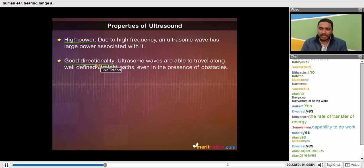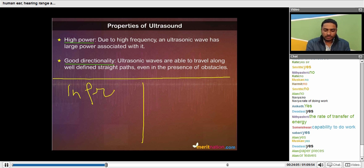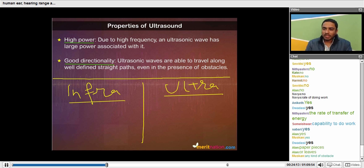So can you tell me which one will have a greater wavelength if the speed is same? Take up this example, just to explain you. See, suppose we have infrasound and ultrasound. Both are having same speed. So which one will have a greater wavelength?